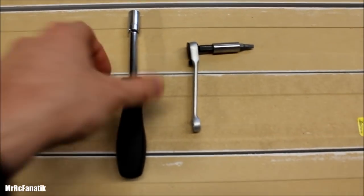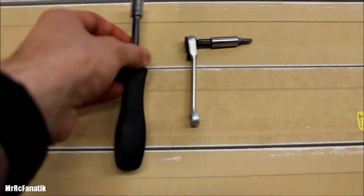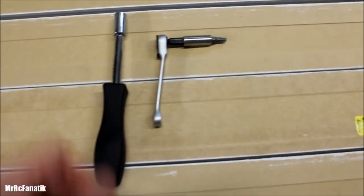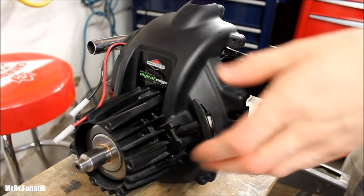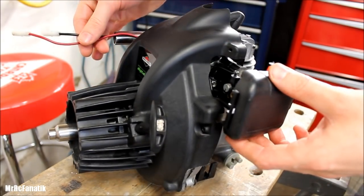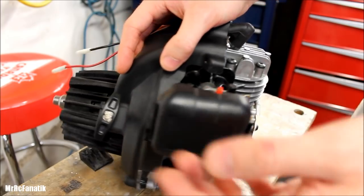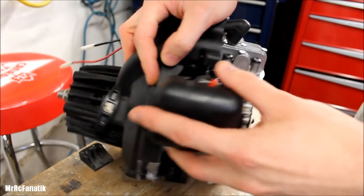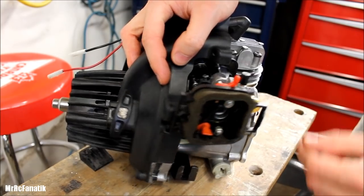This is pretty much all we need to take off the carb: an 8 millimeter socket and a Torx bit, this is a T25. Okay, to start I've already taken it out of the boat, unplugged the kill switch, and taken off the fuel lines.